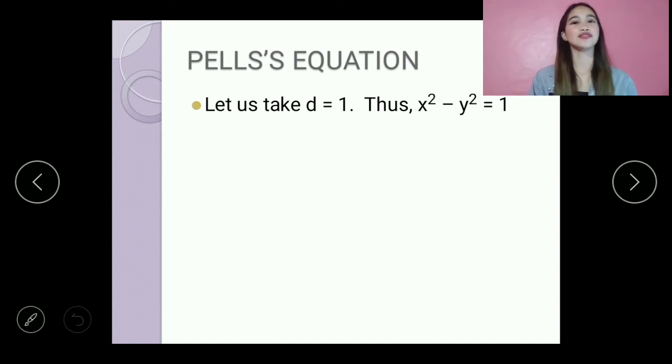Okay, so para mas mabilis niyo maintindihan yung trivial solutions, meron ako ditong example. So let us take d is equal to 1. So our equation will be x squared minus y squared is equal to 1. So ano ba yung dalawang numbers na kapag in-square natin at pinag-minus yung values, ang magiging sagot ay 1?